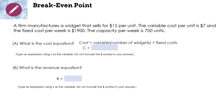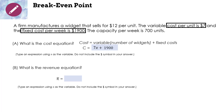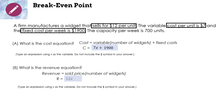The variable cost is $7 per unit times x, the number of widgets we make, plus the fixed cost of $1,900. What is the revenue equation? The revenue equals the selling price times the number of widgets. The manufacturer sells widgets at $12 per unit times x. So R = 12x, where x is the number we sell.